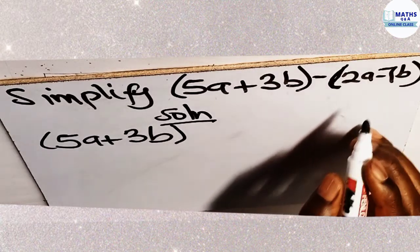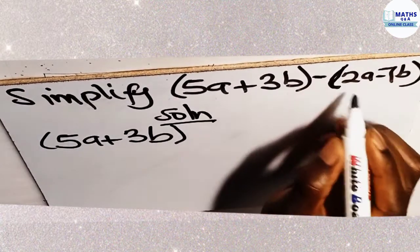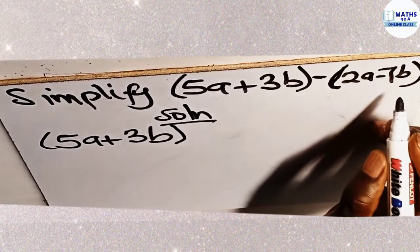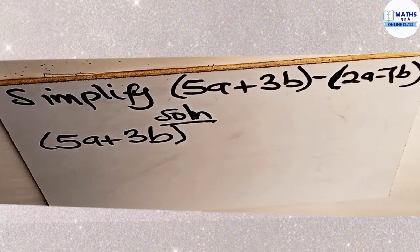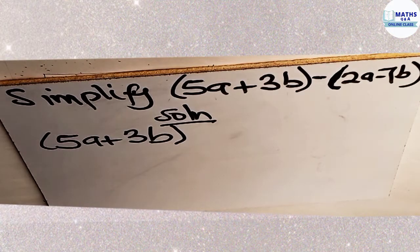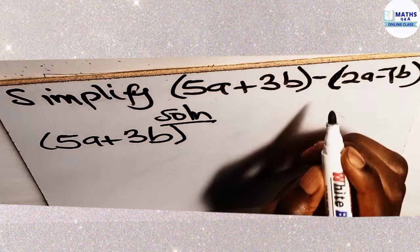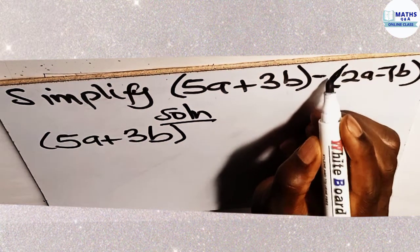So it means that your negative will affect the 2a. It will also affect the 7b. So if you think it will confuse you, in mathematics, any number multiplied by 1 is the same number. So it is assumed that negative 1 is here.